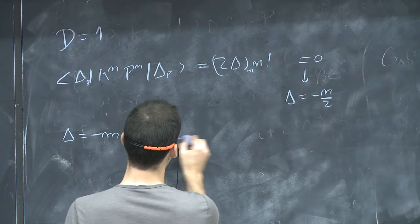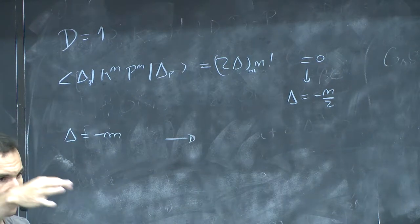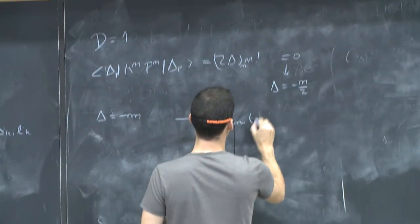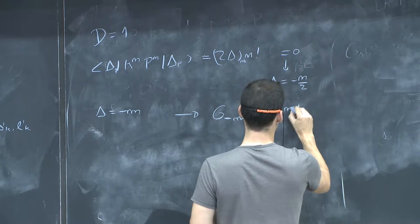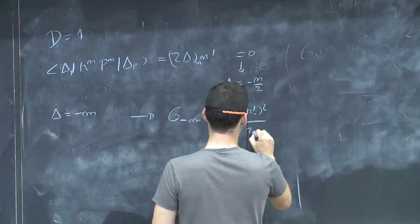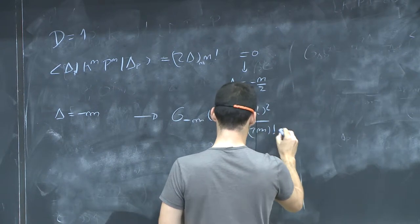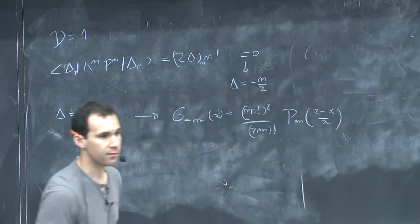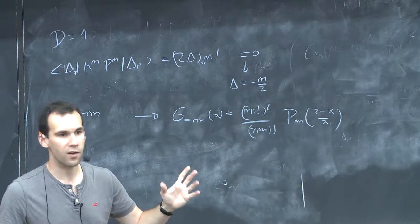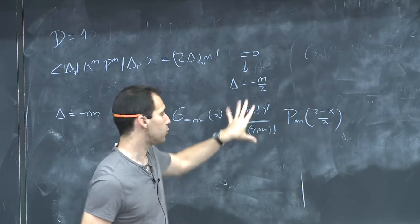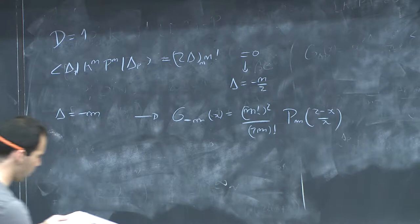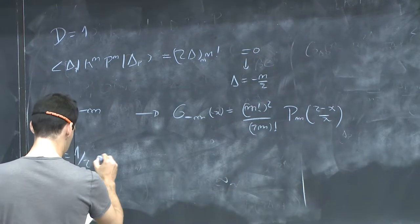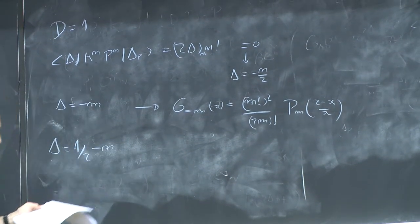When the residue is zero, what actually happens is that the conformal block truncates — the sum defining the conformal block truncates to a finite sum — and you get G_{-M}(x) equals (2M)! times the Legendre polynomial of level M. So instead of some nasty hypergeometric function, it just becomes a Legendre polynomial up to some coefficients.